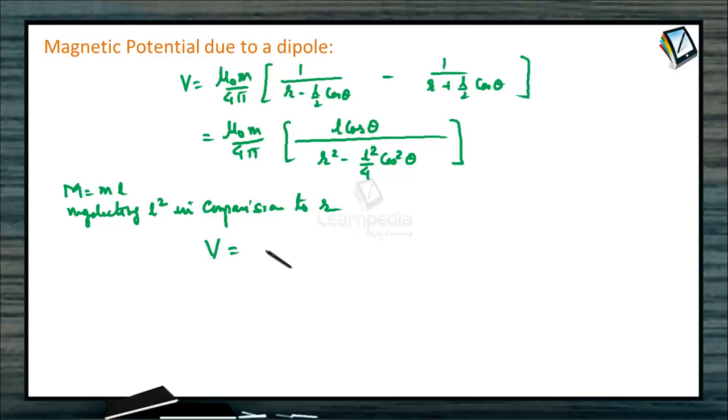We get potential V equals mu naught by 4 pi, capital M cos theta divided by R squared, as the L squared term is neglected. This is the potential of a magnetic dipole.